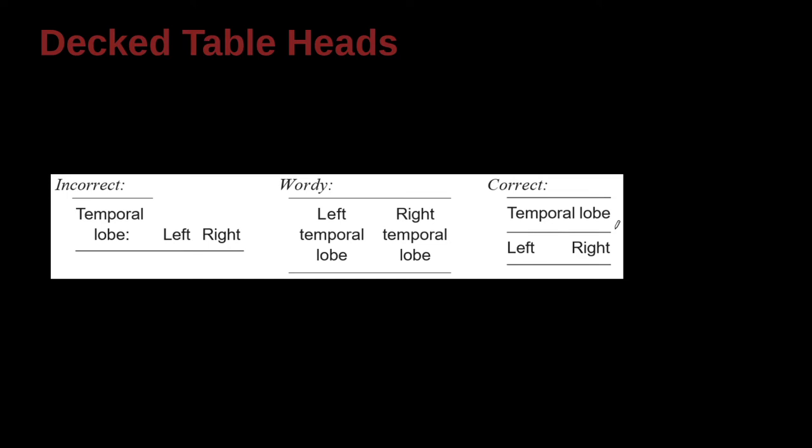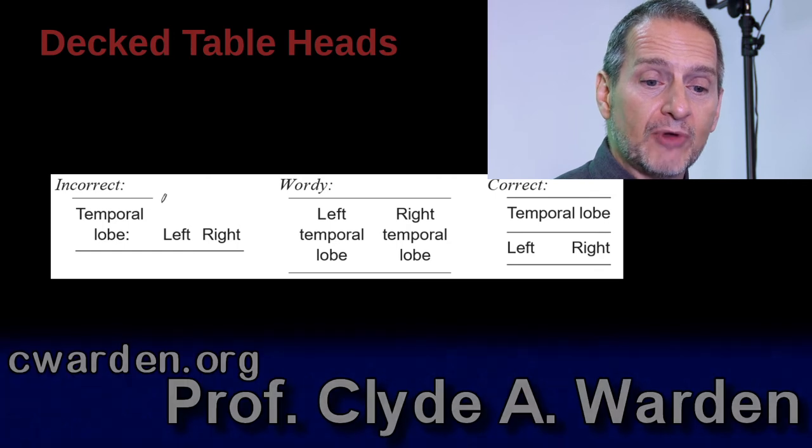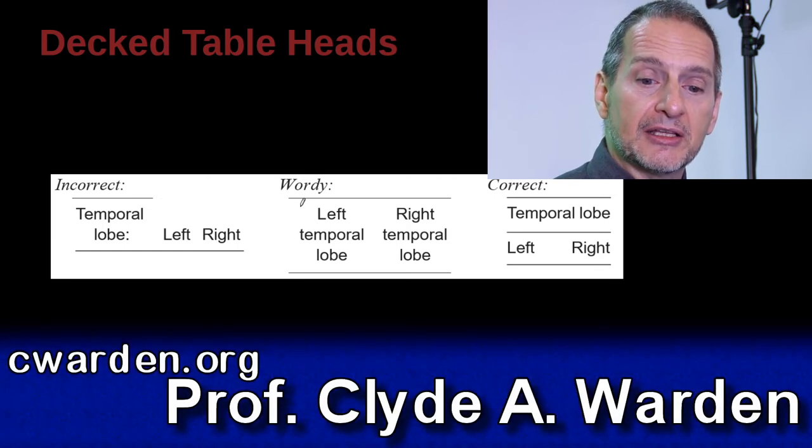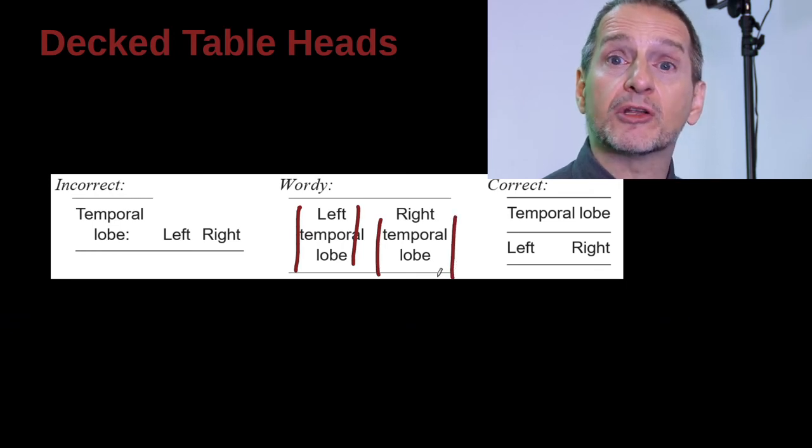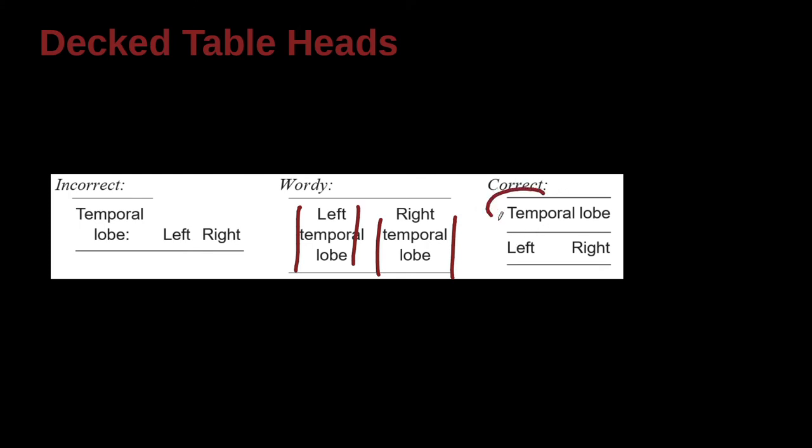Decked is a little bit more complicated, and decked means that we put them together in a way that makes it save space and easy to understand. So if we had this idea of temporal lobe, which is a part of the brain, the left part of your brain, the right part of your brain. So if we're doing some kind of testing or experiment, and we're looking at this temporal lobe, left and right, we could write it this way. Or we could go ahead and say left temporal lobe, what are the results? Right temporal lobe, what are the results? But the easiest way to do it is this decked way, which is I'm looking at the brain, and it has two parts. And so now I'm going to give you the data for the left part, and here I'm going to give you the data for the right part. And that's called a decked table head.